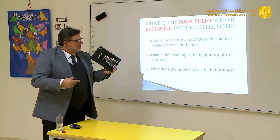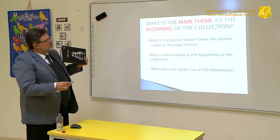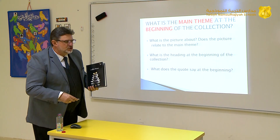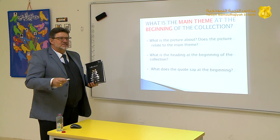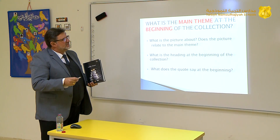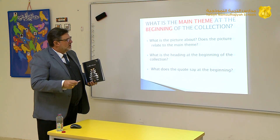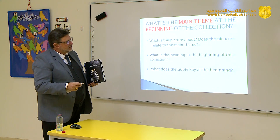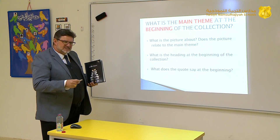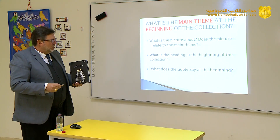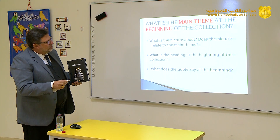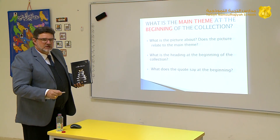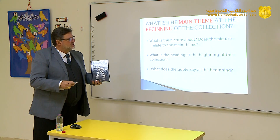How did they organize them? They took these stories and put them together according to a main theme at the beginning of each collection. The collections are numbered: collection number one, collection number two, collection number three. We are currently busy with collection number six. At the beginning of collection number six, we'll find a picture. What does the picture tell us about the collection? There is also a heading — a main theme at the beginning of the collection — and there's also a quote at the beginning of the collection.